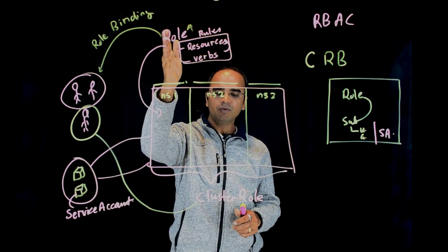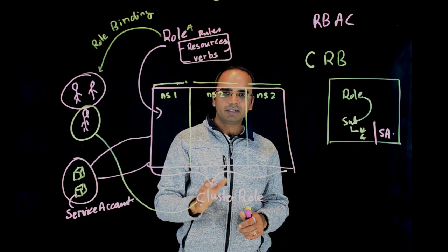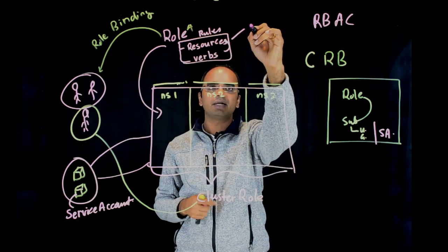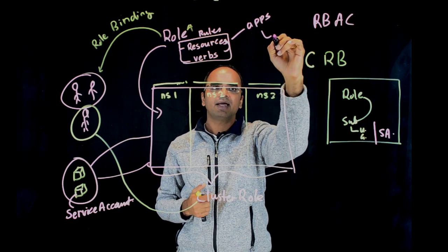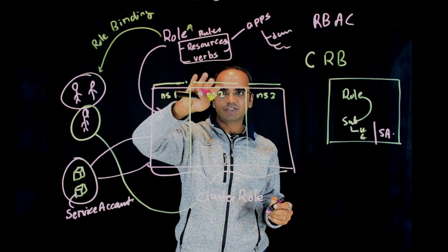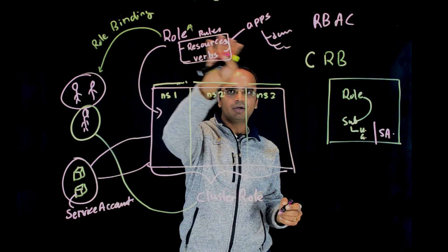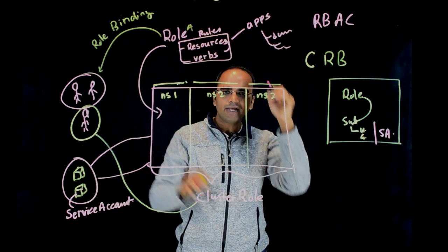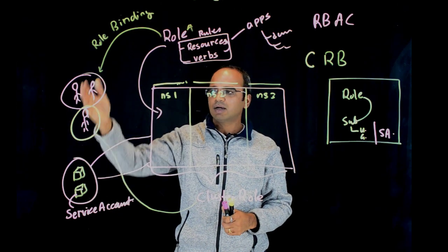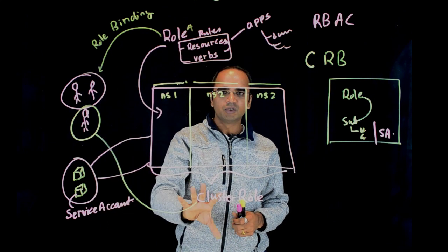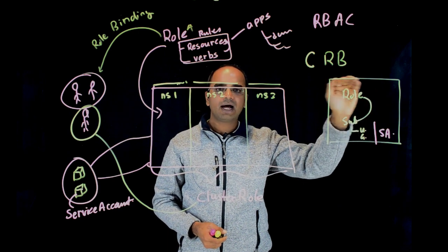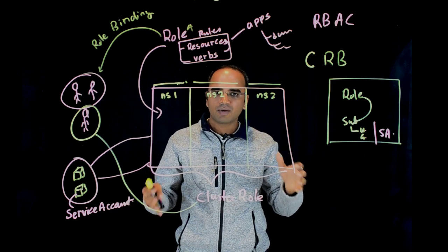Service accounts are for applications. What you define in a role or cluster role is what kind of access is available on what kind of resources. Resources are defined using API groups — for example, a deployment is part of the API group called apps. The action authorized is defined in the form of verbs. Once you define the roles or cluster roles you bind them using role bindings or cluster role bindings. The three components of an RBAC policy are: subjects (users, groups, or service accounts), rules (in roles or cluster roles), and bindings.